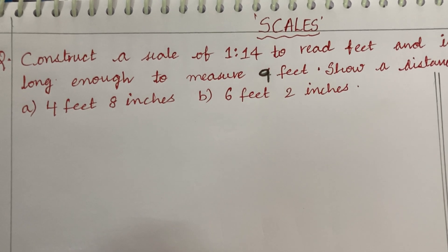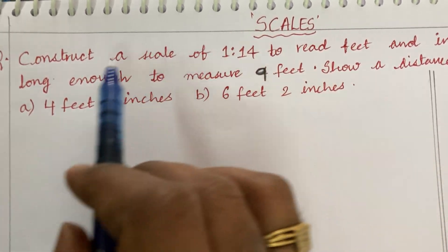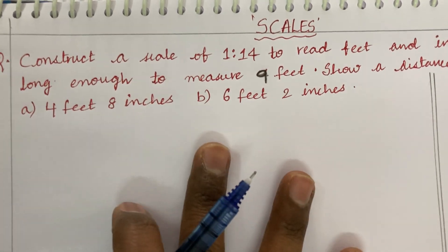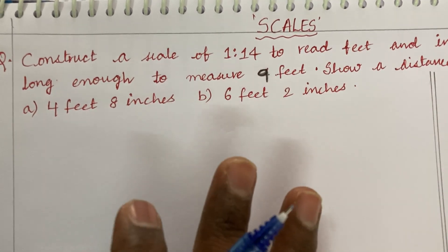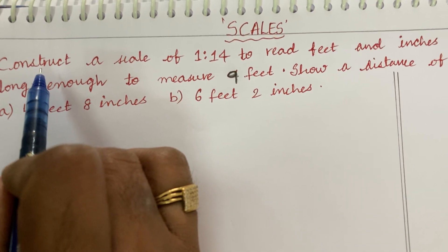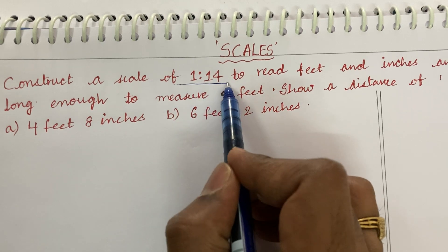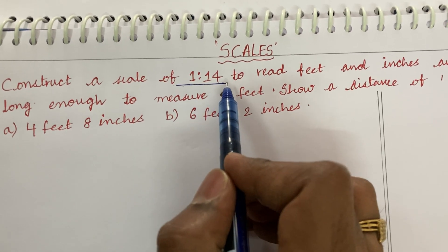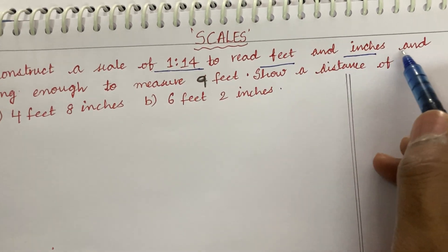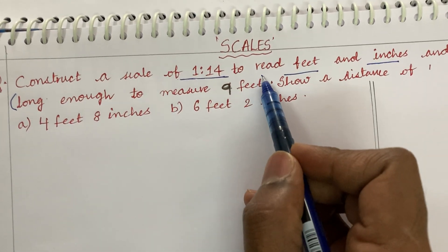Welcome back. This is an interesting and very important problem related to the concept of scales. Let's look into the question and work out first the theoretical part, then the calculation part, then the construction of the scale. Construct a scale of RF 1 to 14 — that is the representation factor — to read feet and inches, and long enough to measure up to 9 feet.